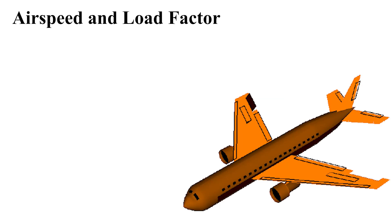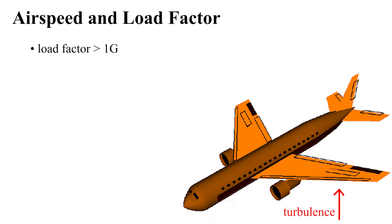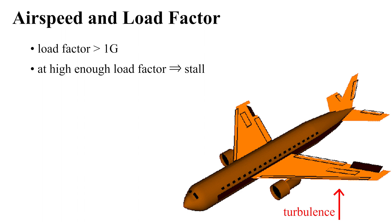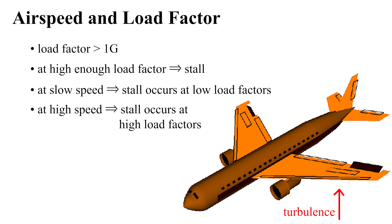Consider an aircraft experiencing turbulence. If a turbulent air hits the airplane's left wing from below, the aircraft will start banking to the right. This will lead to a load factor above 1. If the banking angle continues growing, the aircraft will stall at some point. At slower airspeeds, the stall happens faster in comparison to higher airspeeds. This is because the stalling speed is proportional to the square root of the load factor, as mentioned before.